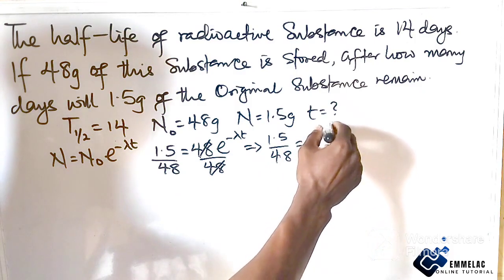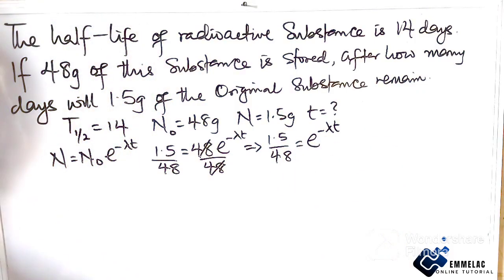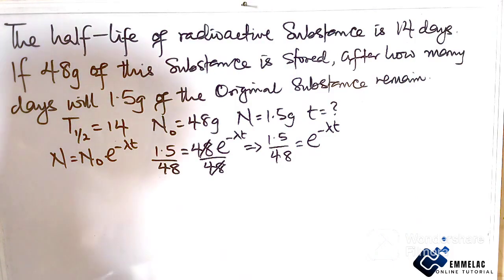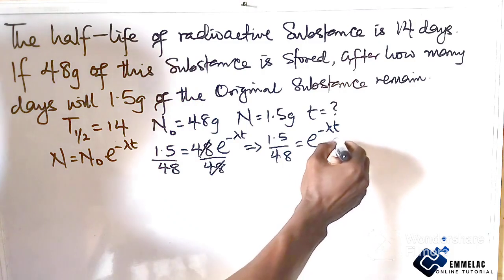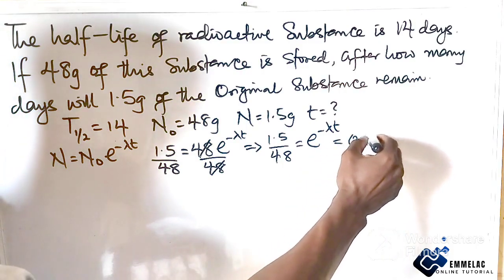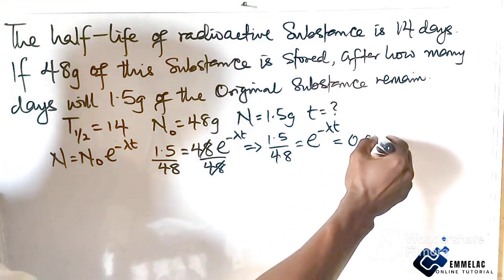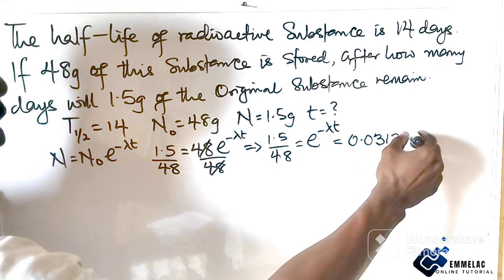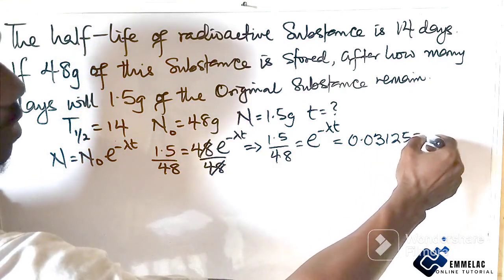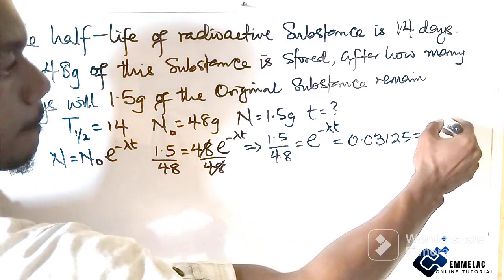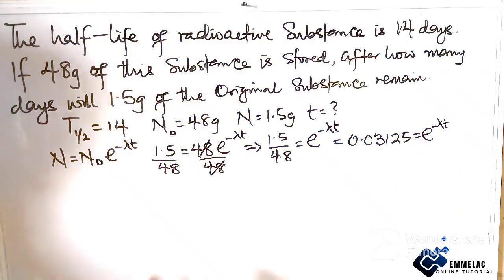So 1.5 divided by 48, using the calculator, should give us 0.03125.